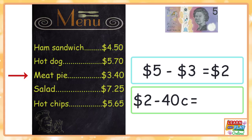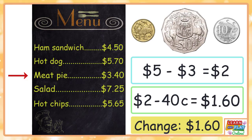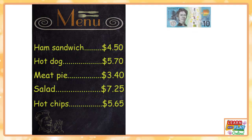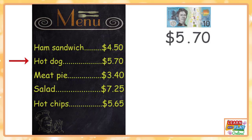Now we're going to work with the cents. Starting with two dollars, we're going to take away forty cents — that will leave us with one dollar and sixty cents. So our change will be one dollar and sixty cents if we buy the meat pie. For the rest of the choices on the menu, I'm going to pretend that I'm starting with ten dollars. Let's say I buy a hot dog — as you can see on the menu, the hot dog will cost me five dollars and seventy cents.